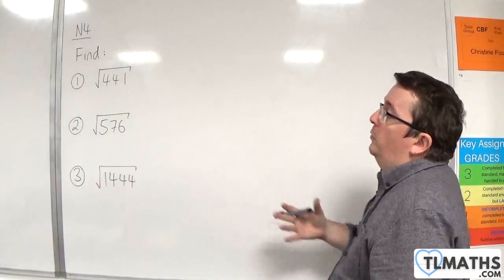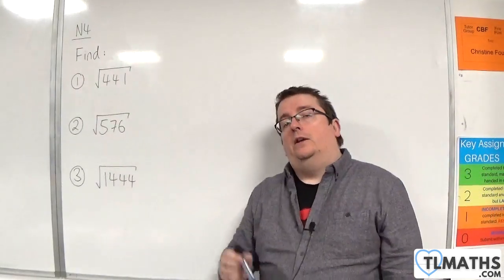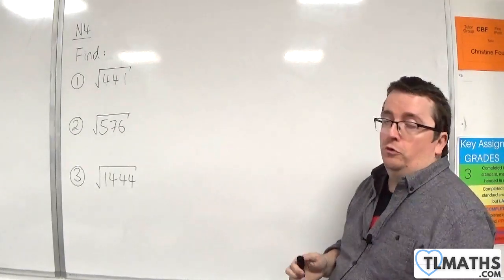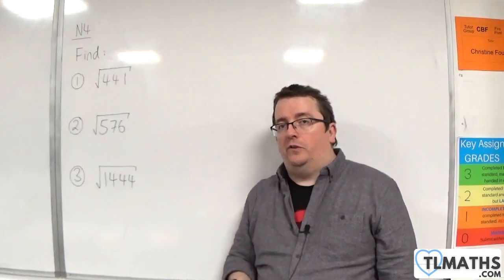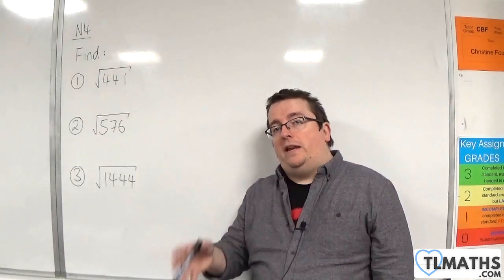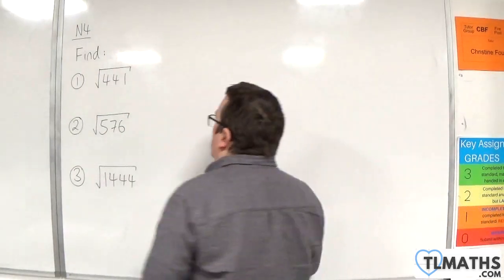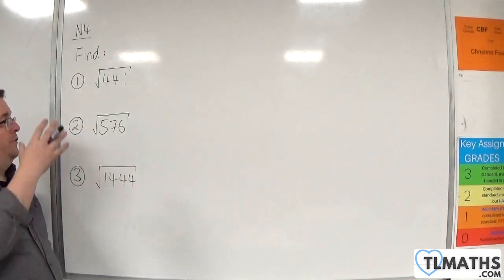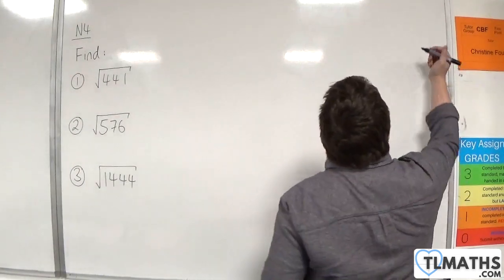In this video, I want to go through some examples of finding the square roots of these square numbers. So I'm going to tell you that 441, 576, and 1,444 — these are all square numbers that I'm trying to find the square root of. We're not going into decimals or anything, and we're going to be using the unique factorisation theorem, the fundamental theorem of arithmetic. In order to do that, I'm going to write down the first few prime numbers — the first six as I've been doing in the other videos.